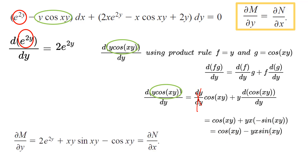So the partial derivative of M with respect to y is 2e^(2y) minus the quantity (cos(xy) − xy·sin(xy)), which distributes to give 2e^(2y) − cos(xy) + xy·sin(xy). Applying the same rules, the partial derivative of N with respect to x equals the same quantity. So the two sides are equal, confirming that this is an exact differential equation.